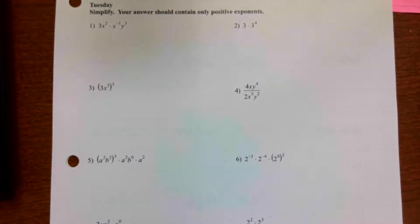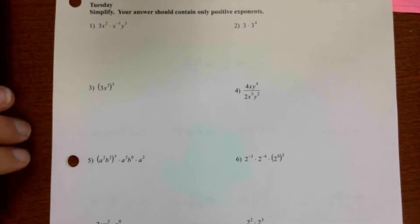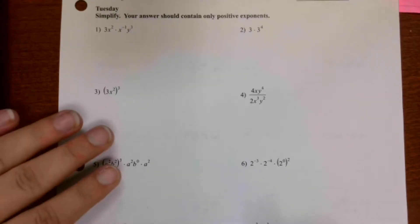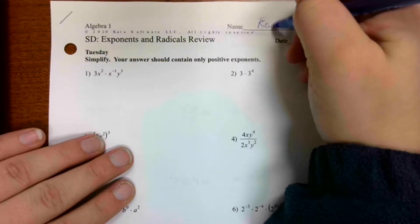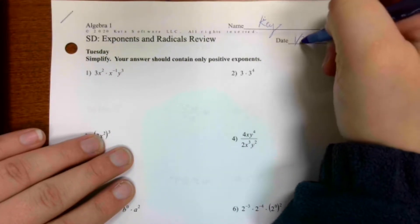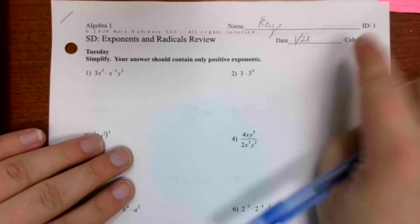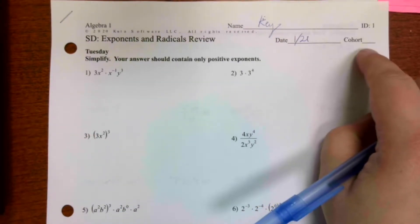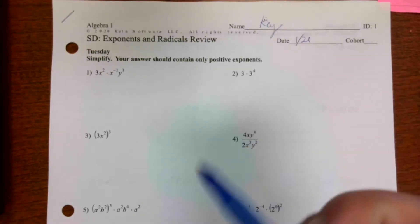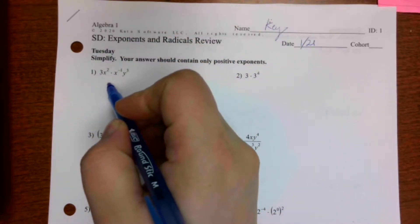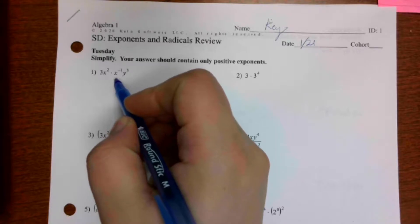Alright guys, welcome back. Hope you had a good three-day weekend. Let's do a quick review. First thing I want you to do is make sure you put your name and the date and whatever class you're in, like cohort five, cohort six, etc. The first thing we're going to do is just put together the things that are the same.